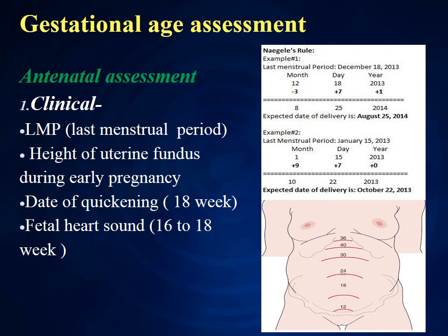Next, fetal movement, or quickening, starts at about 18 weeks of age. When you ask the patient whether fetal movement has started or not, if the answer is yes, then it is 100% sure that it is at minimum 18 weeks old. Next is fetal heart sound. You can assess it by stethoscope after 16 weeks. These are some clinical methods to assess antenatal gestational age.